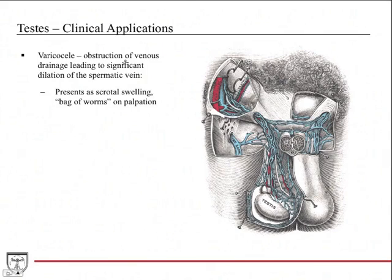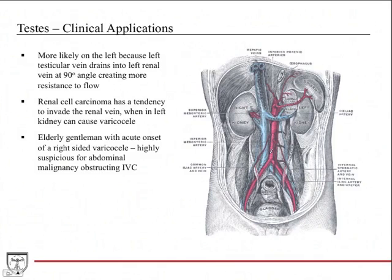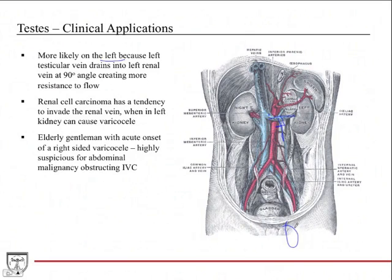A varicocele is an obstruction of venous drainage leading to significant dilation of the spermatic vein. On palpation it feels like a bag of worms because of all the venous congestion. This is more likely to occur on the left, because the left testicular vein drains into the left renal vein at a 90-degree angle, creating more resistance to flow. As a result, venous blood backs up within the scrotal sac on the left side.